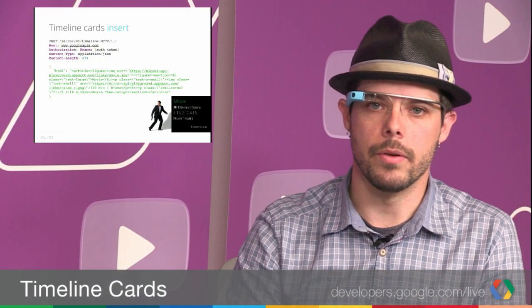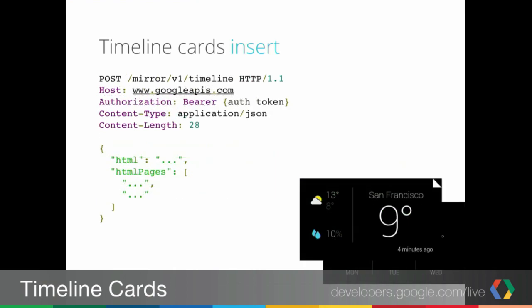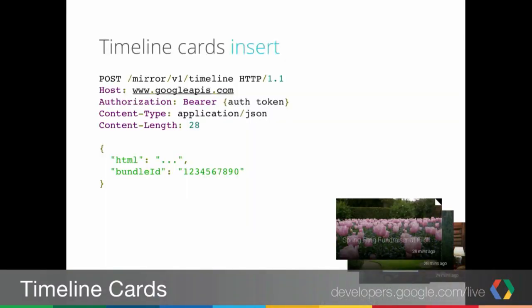I can also do HTML and bundling. Now this is the bundling for a paginated bundle, where it's a single timeline item. You can see I'm specifying the HTML, and I'm also specifying the HTML pages that will show when the user taps into the bundle. If I wanted a threaded bundle, it'll look like this — it's a single timeline item with a bundle ID. Now I make the same bundle ID and add it to the payload of all the other timeline items that I want linked together in this single bundle.